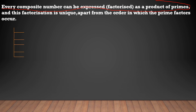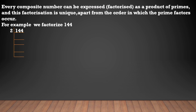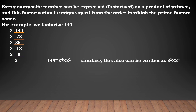The second point is that this factorization is unique, apart from the order in which the prime factors occur. To understand this, I will give an example. If you want to factorize 144 with prime numbers: 2 divides to give 72, again 2 gives 36, again 2 gives 18, 2 gives 9, and 3 gives 3. So 144 can be written as 2 to the power 4 into 3 squared. This can also be written as 3 squared into 2 to the power 4.